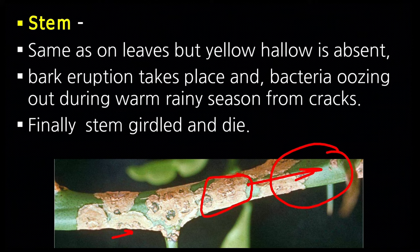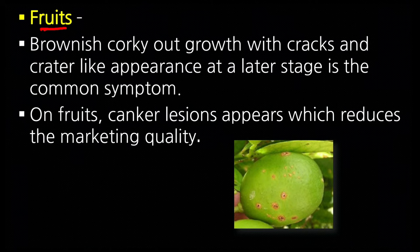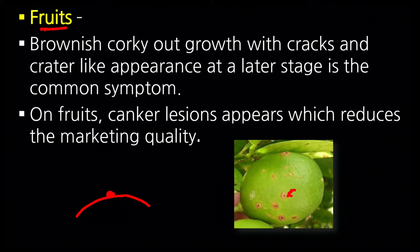Symptoms in fruits: the same type of symptoms appear, and here too the yellow halo is absent. The symptoms are present only in the bark — only in the upper peel — and do not move inward. Such spots appear in very large numbers on fruits, reducing the market quality and market value. If symptoms are very severe, the fruits remain small and fall before maturity.